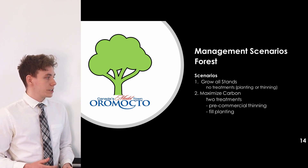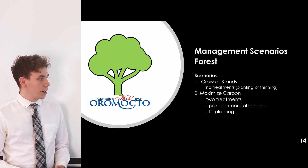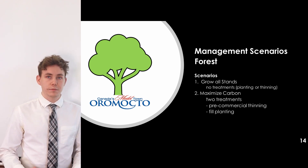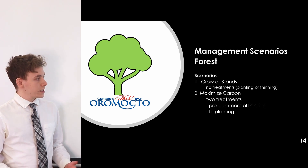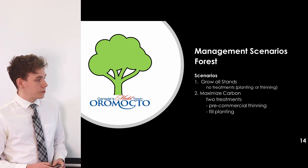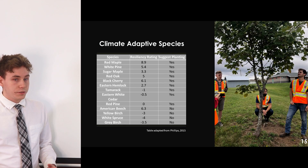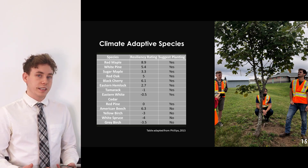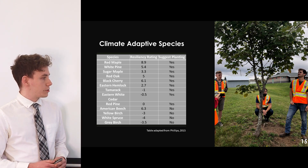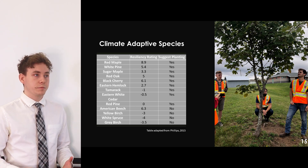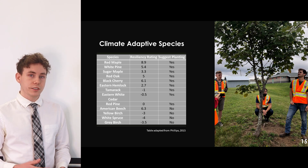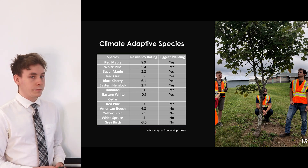Our second scenario was to maximize carbon, allowing for two treatments: pre-commercial thinning and fill planting. The goal was to maximize carbon and increase climate-adaptive species through fill planting. We identified climate-adaptive species from a report developed by the Fundy Biosphere entitled 'Forests of the Future,' which outlined climate-adaptive species suited to our current climate and was used to analyze whether initial and forecasted conditions met proper species composition goals.